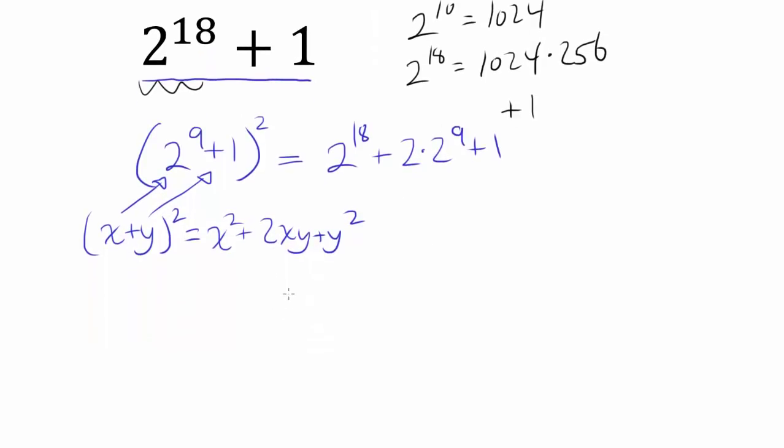So what do we know? We know 2 to the 9th plus 1 squared minus, well, this thing is the same thing as 2 to the 10th, because you have two times 2 to the 9th, minus 2 to the 10th has to be 2 to the 18th plus 1.